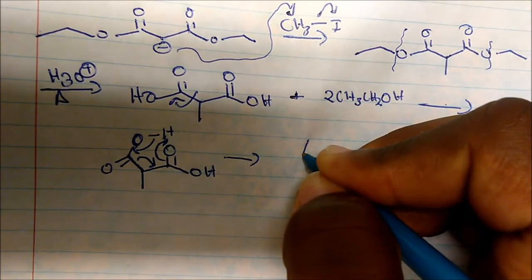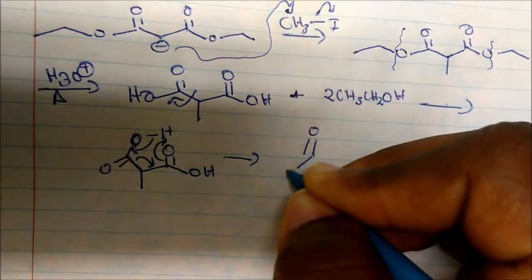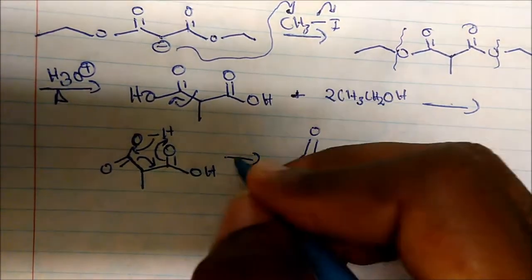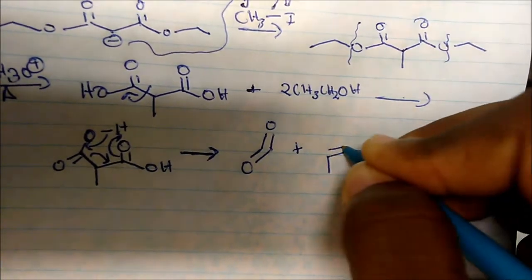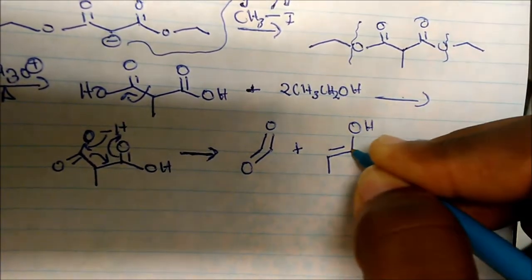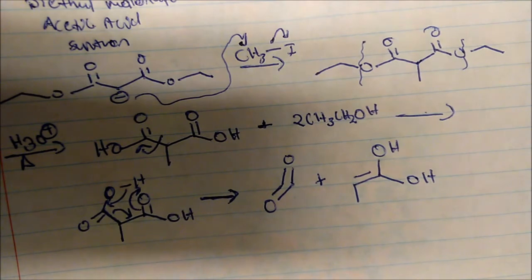And so what do we get? We get this. Look where my arrow's going. I have a double bond here. I have a double bond here. So this is CO2. So this is what we produce carbon dioxide in the process. Plus, I have the double bond here. I have an alcohol here, and I have an alcohol here.